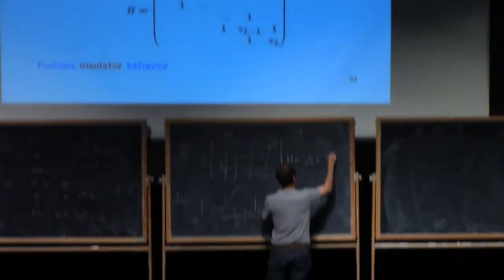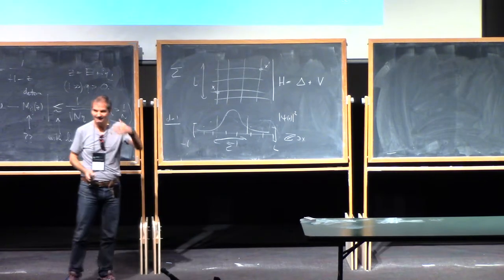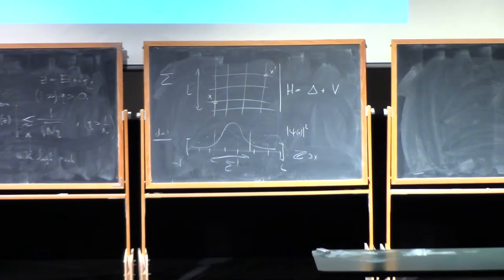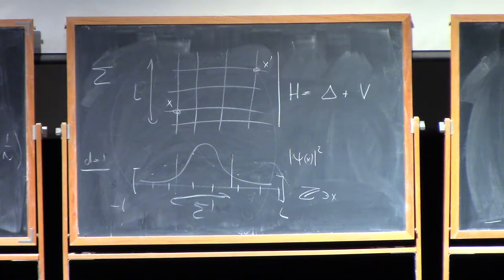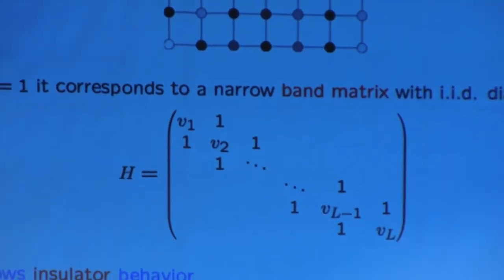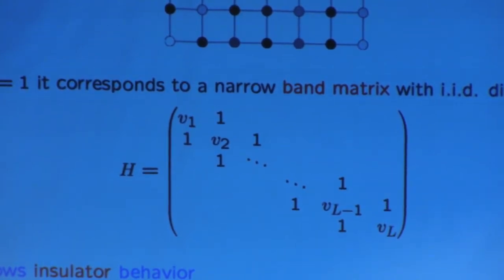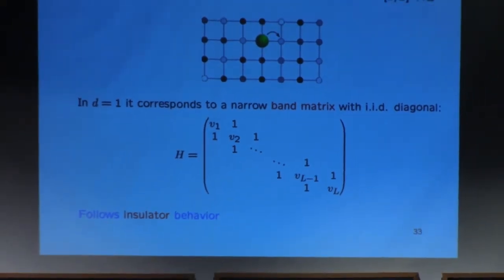Consider the Laplacian plus some random potential. The random potential always acts diagonally — it's an on-site randomness, an on-site potential, and it has different values at different points in the configuration space because the randomness is different. So there is a random variable and the value of the potential changes from site to site. You also have the Laplacian, which is the basic kinetic energy. That's a very typical random Schrödinger model, and this is how you should think of it.